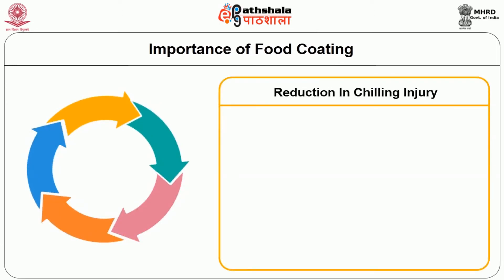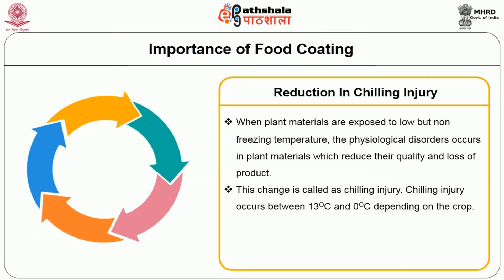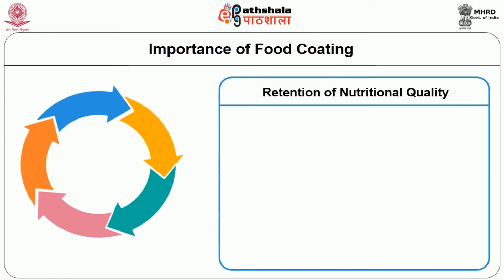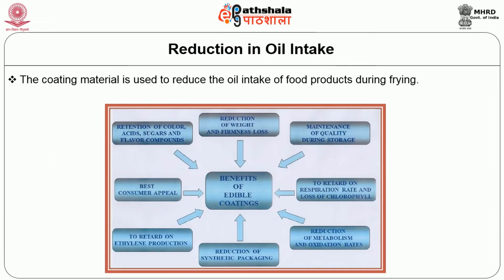The next benefit is reduction in chilling injury. When plant materials are exposed to low but non-freezing temperatures, physiological disorders occur which reduce quality and cause product loss. This is called chilling injury, occurring between 0°C and 13°C depending on the crop. Wax coating in particular reduces chilling injury. Next is retention of nutritional quality. Edible coating on food materials retains color, acids, sugars, and flavor components. Next is reduction in oil intake. Coating material is used to reduce the oil intake of food products during frying.